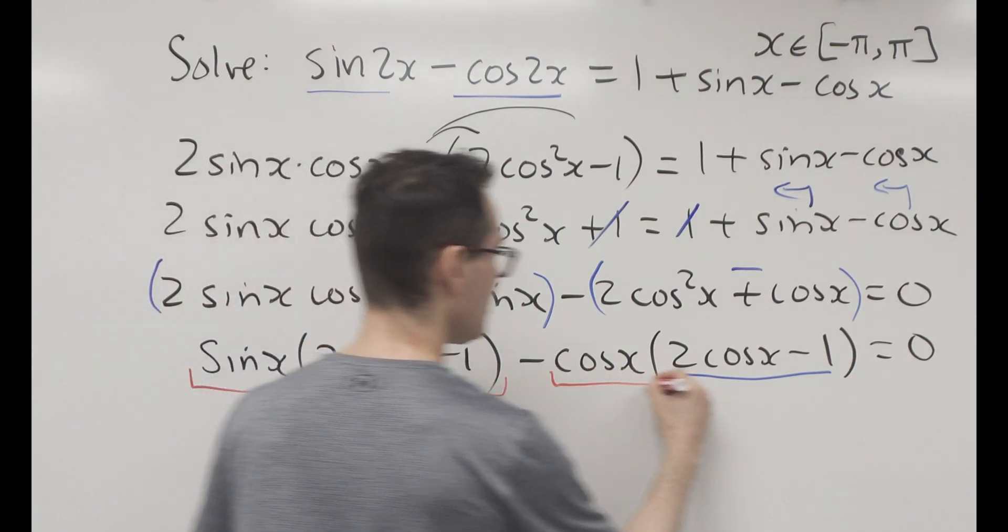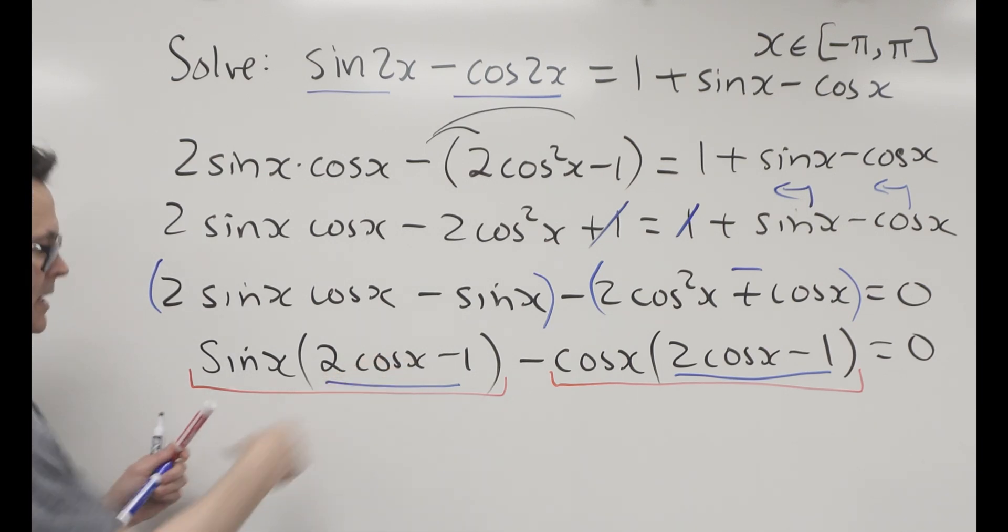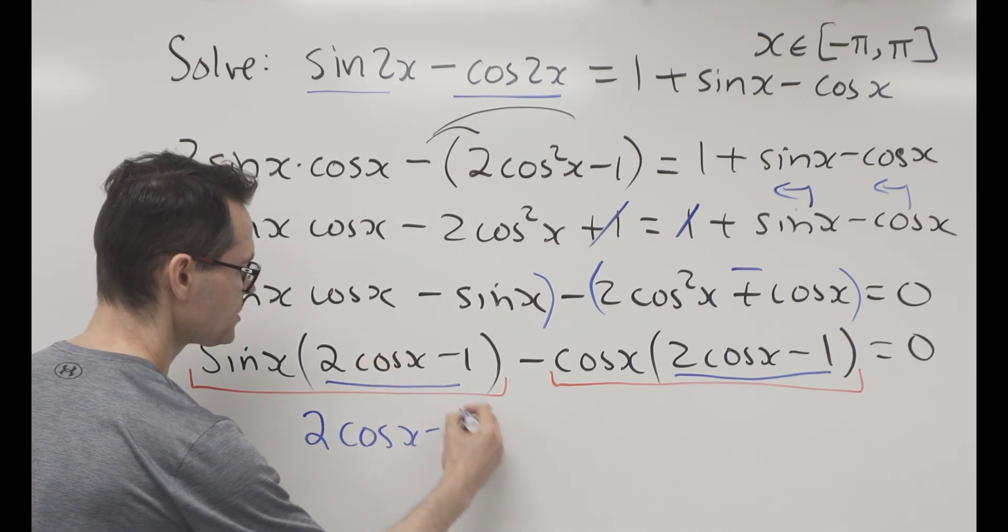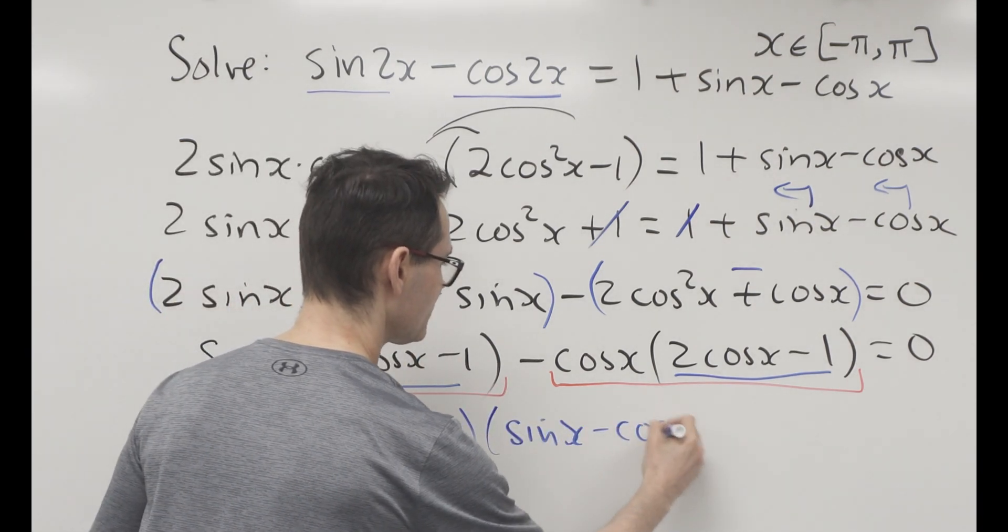The GCF, the greatest common factor, is 2 cos minus 1. So 2 cos x minus 1, it's a binomial common factor, and when I divide each term by it, I'm left with sine x minus cos x equals 0.